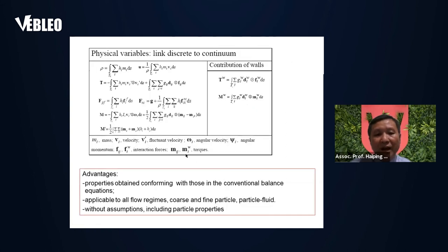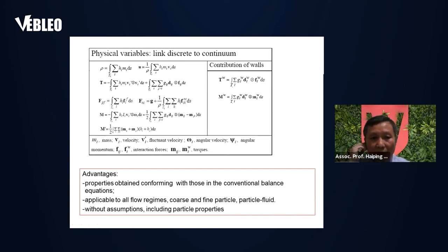We can find equations showing the relationship between discrete and continuum variables. For example, these equations on the left-hand side show the continuum variables — t is the stress. The right-hand side relates to discrete variables; for example, v-prime relates to the fluctuation of velocity, and f is the contact force between particles. We can use these equations to determine the continuum variables.